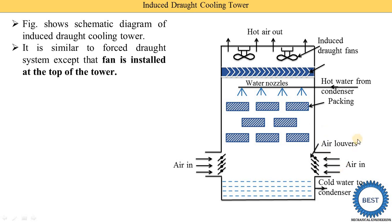In a forced draft, we push the air inside the tower. Here, we pull the air. So, when we install the fan at the top of the tower, this fan sucks the air. When the fan sucks the air, a vacuum is created, and due to this vacuum, the atmospheric air enters the cooling tower through the louvers.